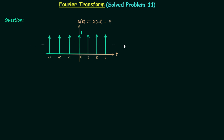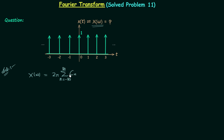Signal x(t) is a periodic impulse train and we are required to calculate its Fourier transform X(ω). Since we have a periodic signal, we will use the formula obtained in the last lecture: the Fourier transform of a periodic signal is equal to 2π times the summation from n = −∞ to ∞ of Cn, where Cn is the complex exponential Fourier coefficient, multiplied by δ(ω − nω₀).